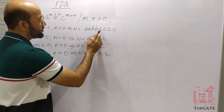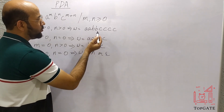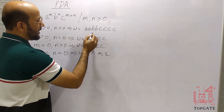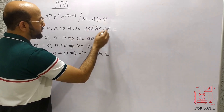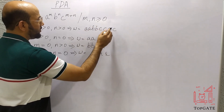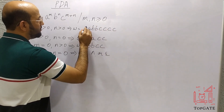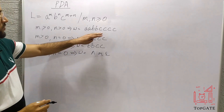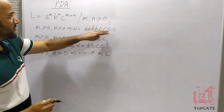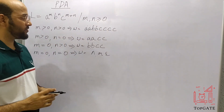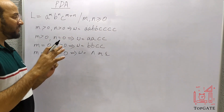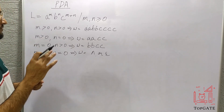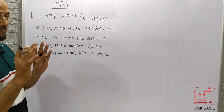As soon as the first c comes, we pop an element. Second c — pop. Third c — pop. Fourth c — pop. So for every c we pop every element from the stack, and finally the string ends, z0 is left, and we are done. The logic for case 2 is: push a's, then pop with c's. For case 3: push b's, then pop with c's.